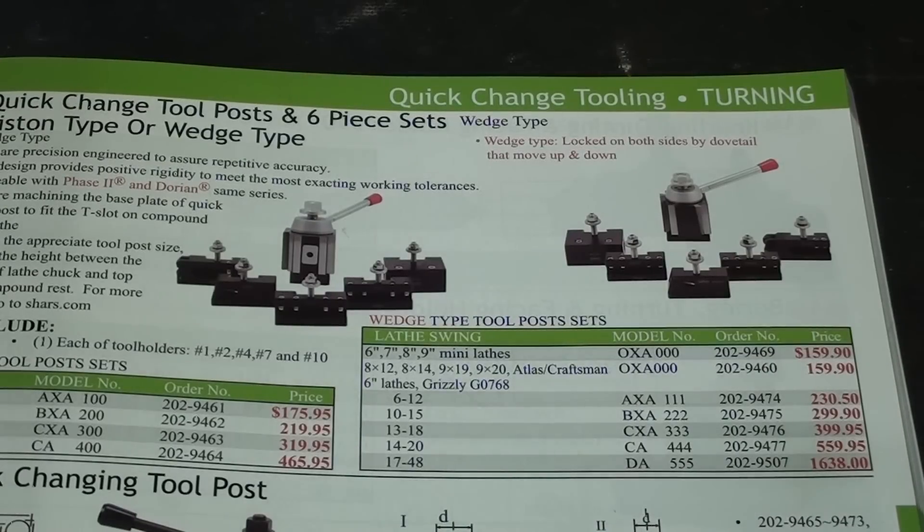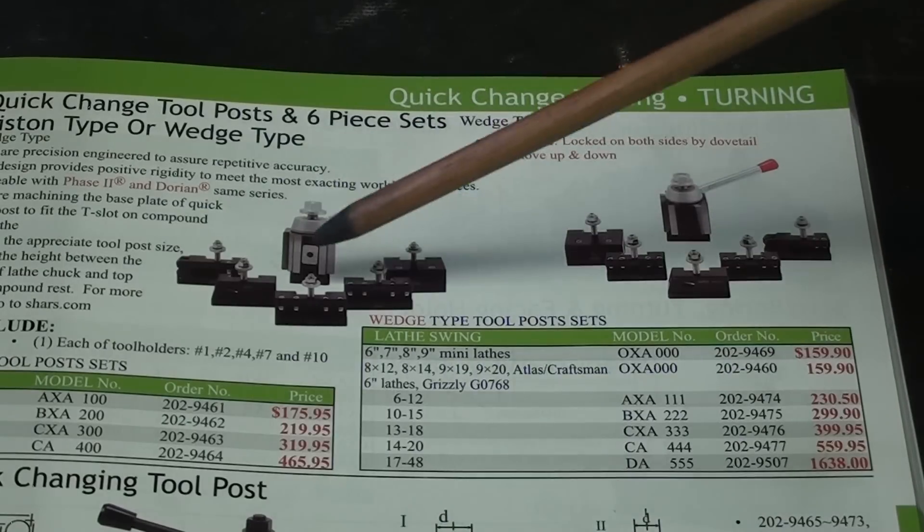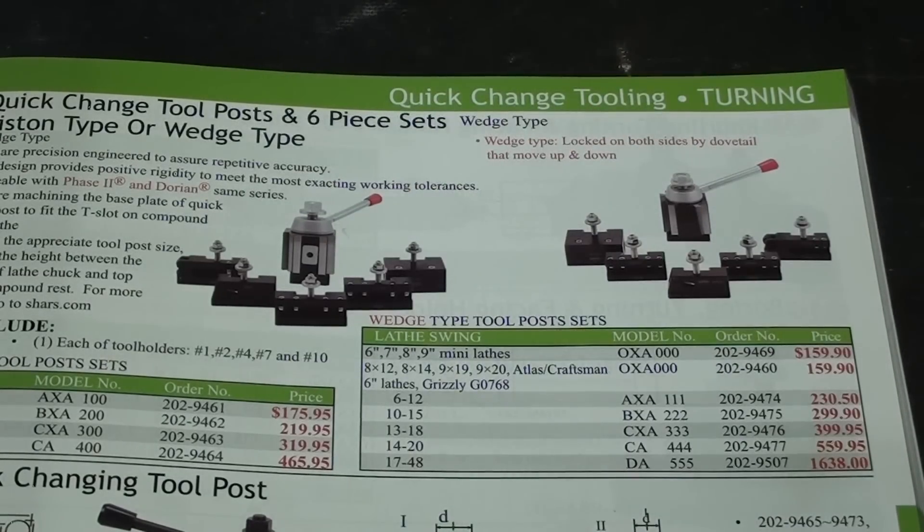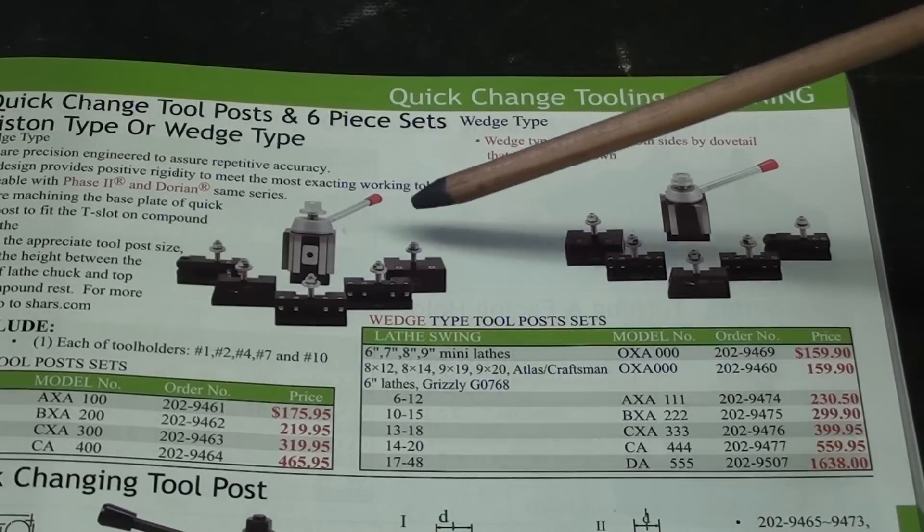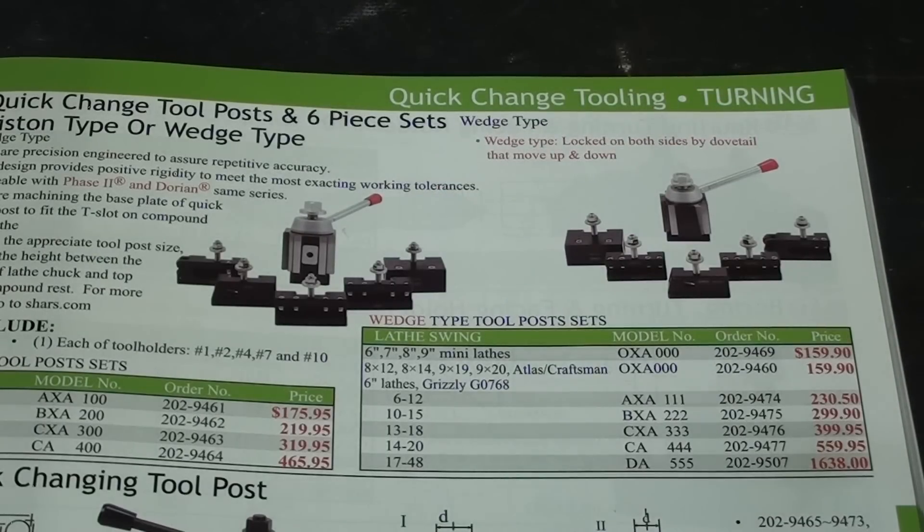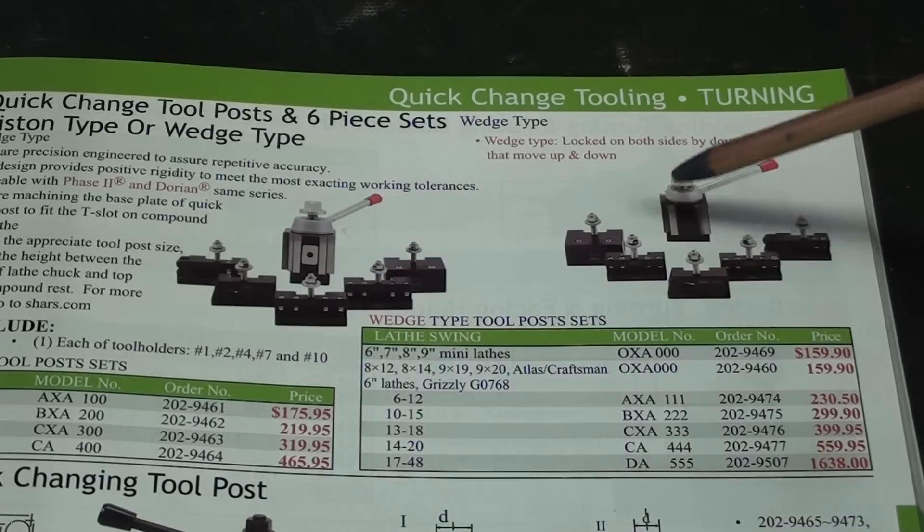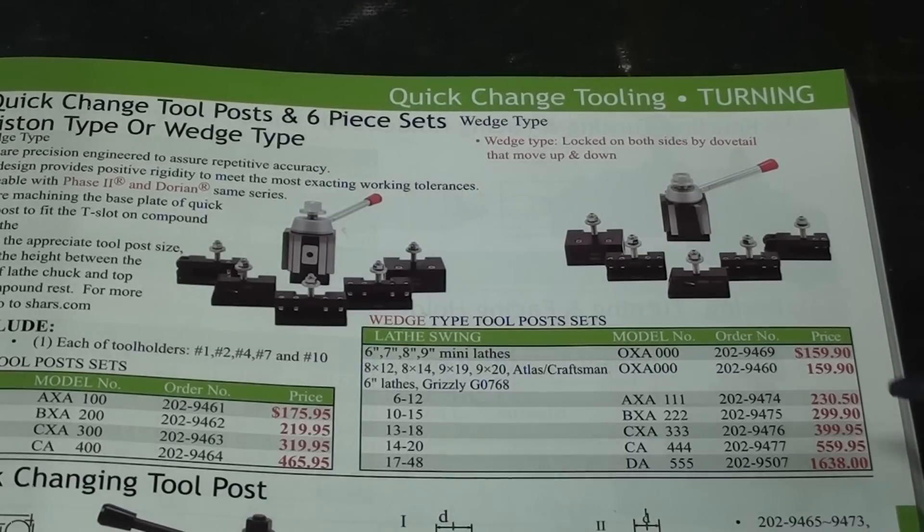You are looking at the 2020 Shars catalog, and if you want a package deal here, they offer the piston type tool post along with five tool holders for $175. I'm sure the price is up a little bit. This is being filmed in 2023, and if you want the wedge type from Shars, in the A size, it is $230, and in the B size, it would be $300.